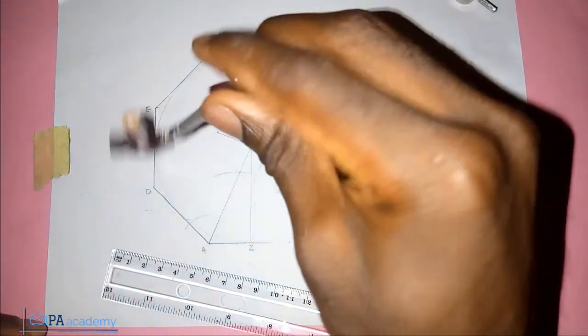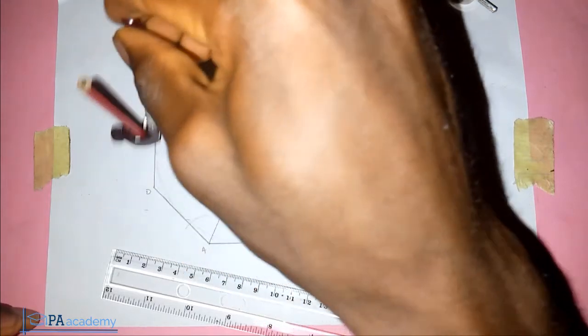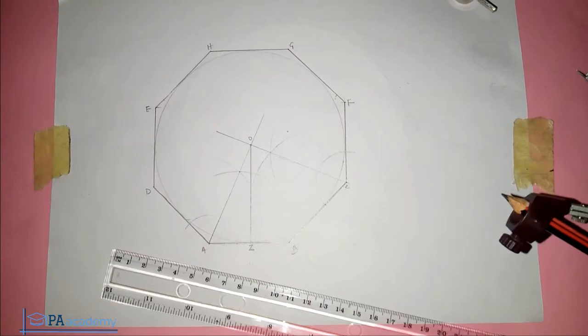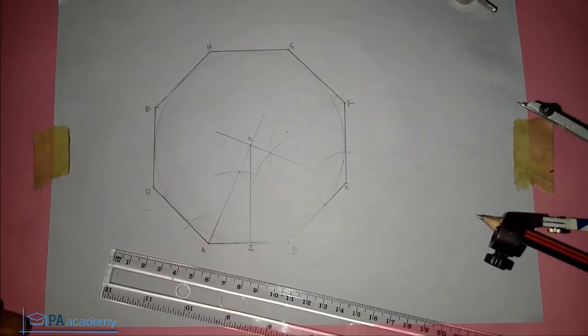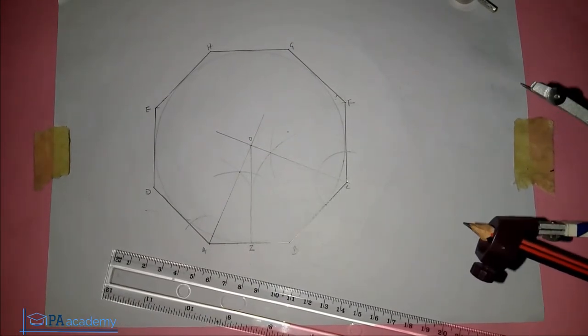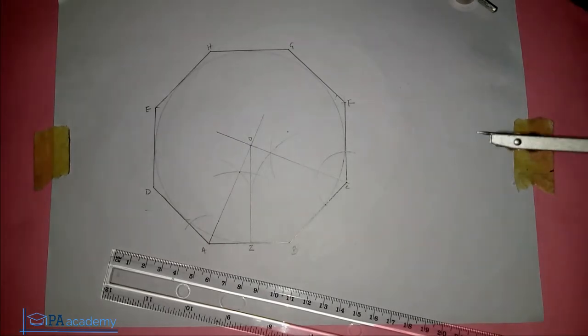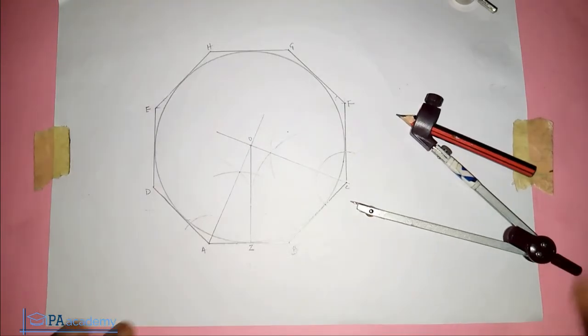I'm just going through so that it can be bolder. You can see we already have a circle touching all eight sides. Let me just go through it one more time so that it can be bold. Okay, the circle is clearer now.